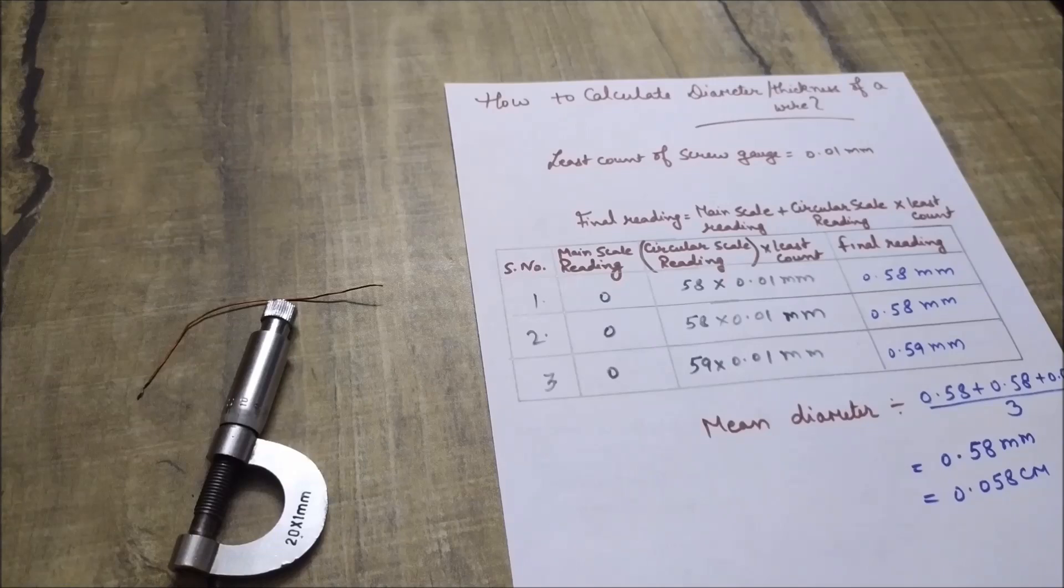I hope you all enjoyed the session and it is clear to you all how to calculate the diameter or the thickness of a material using screw gauge. Keep supporting us by liking and sharing our video. Do subscribe the channel. Do not forget to press the bell icon. See you again students in our next video. God bless you all.